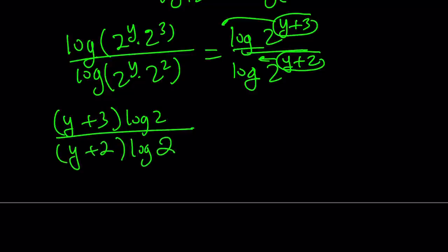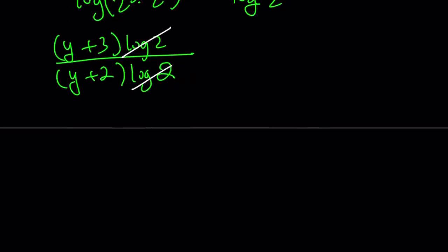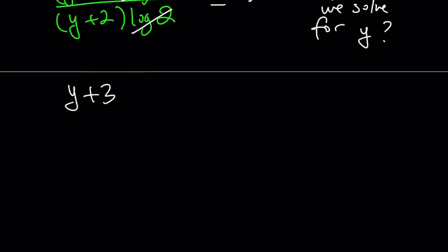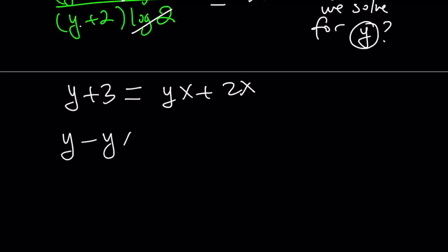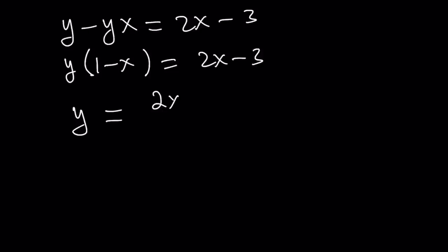Using the power property, bring the exponents to the front: that gives us y plus 3 times log 2 divided by y plus 2 times log 2. Obviously log 2 cancels out, leaving us with something in terms of y. But this expression was equal to x, so let's set this equal to x and solve for y. Cross-multiplying gives yx plus 2x. Putting y terms together: y minus yx equals 2x minus 3. Factoring out y gives 1 minus x, so y equals 2x minus 3 divided by 1 minus x. Note that x equals 1 is not in the domain, but we already know that.